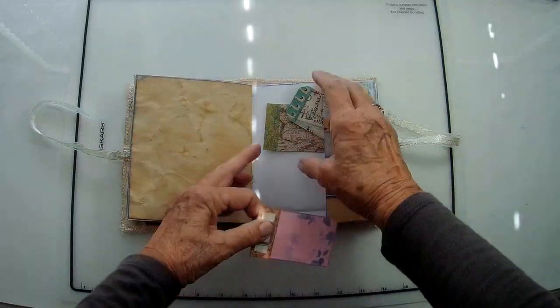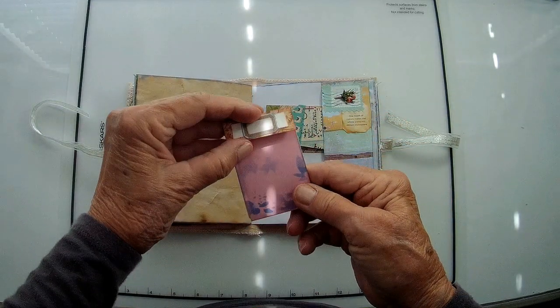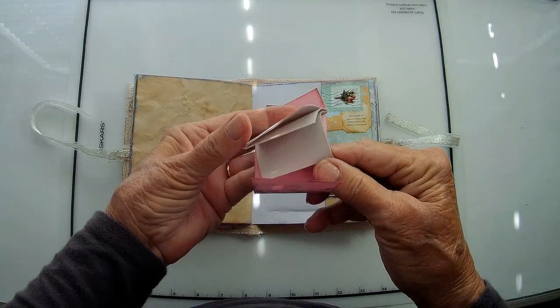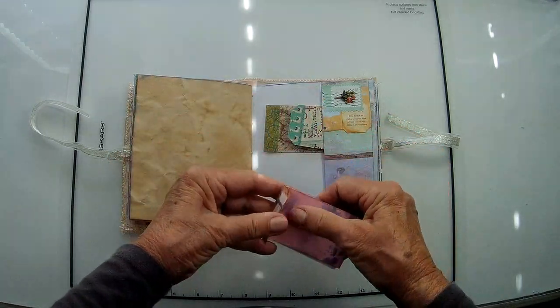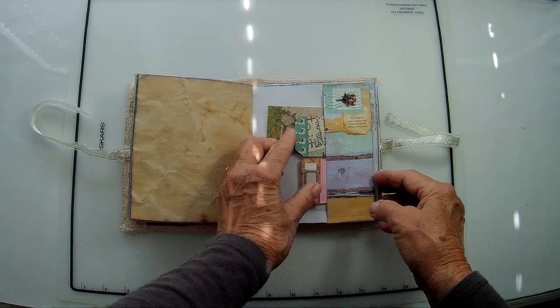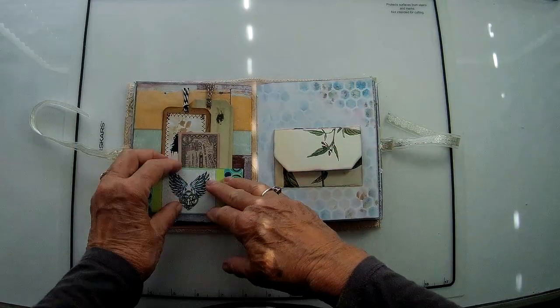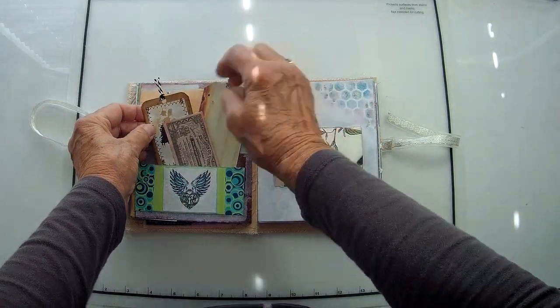It also has 10 tuck spots like this little tucking spot right there, and about 20 tags, and I don't know how many of these little pads that I like to put in there. I think they're so cute.